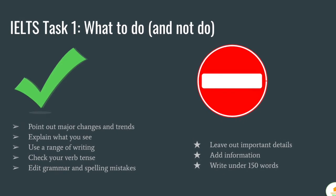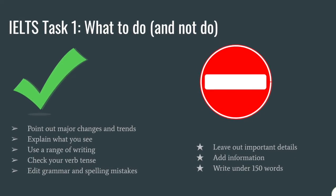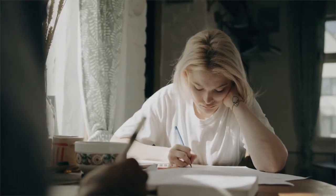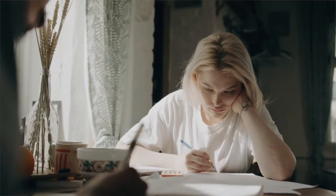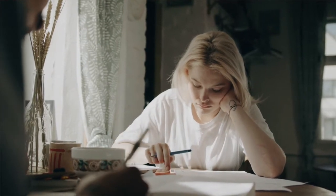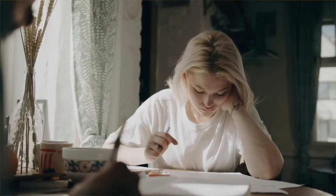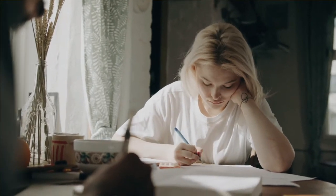The things you must focus on in task one are the major changes and trends — what I like to call the slope: inclines, decreases, or plateaus (flat, no change). You use a range of writing, meaning different verbs, adjectives, and adverbs to describe the patterns you're seeing. Verb tense is also important because the chart sometimes refers to a specific period of time, so be very careful about using the right verb tense when explaining task one items.